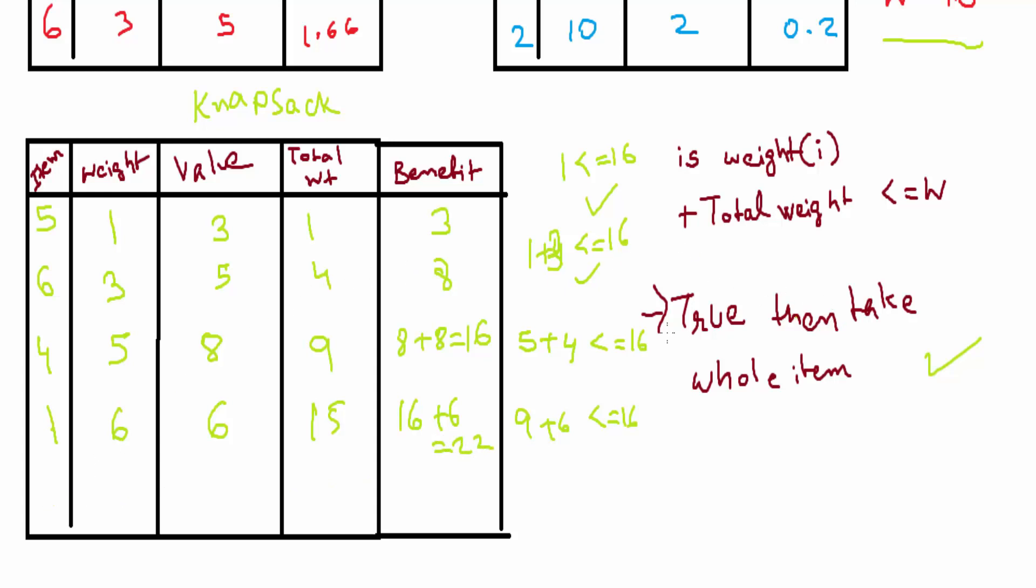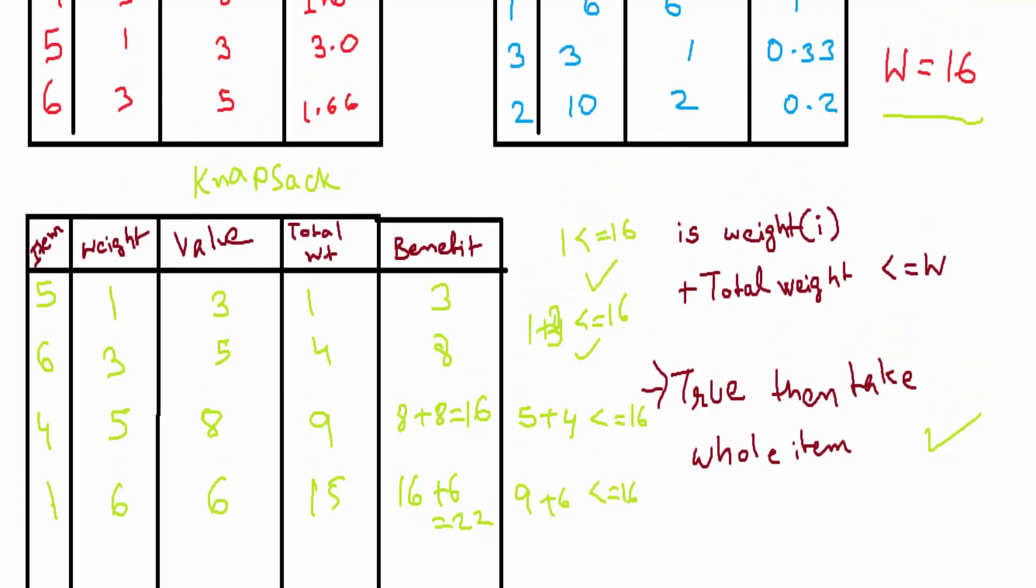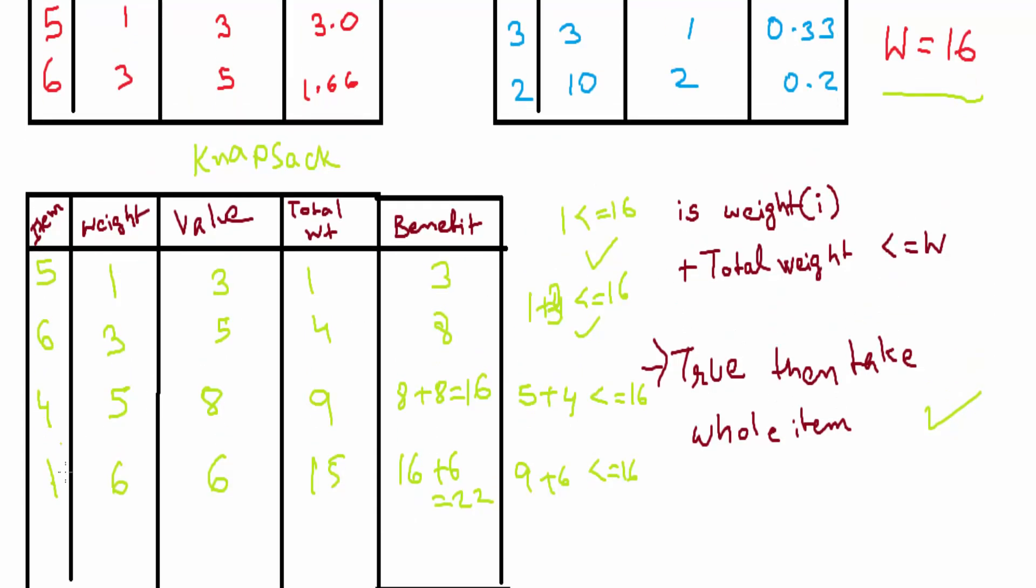Now the next item we have is 3. Its weight is 3 and its value is 1. We'll see that 15 plus 3 is not less than or equal to 16. So we'll not take the whole item. For now we'll take a fraction. Here comes the density.